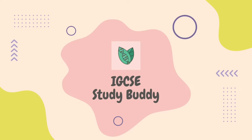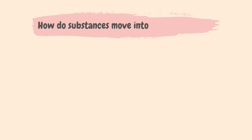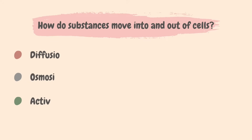Hi everyone, welcome to IGCSE Study Buddy, where you can revise biology topics from the Cambridge IGCSE syllabus. This video summarizes topic 3, movement into and out of cells. In this chapter, we will learn how substances move into and out of cells. There are three main ways in which this may take place: diffusion, osmosis, and active transport.